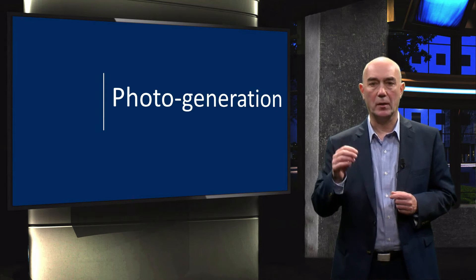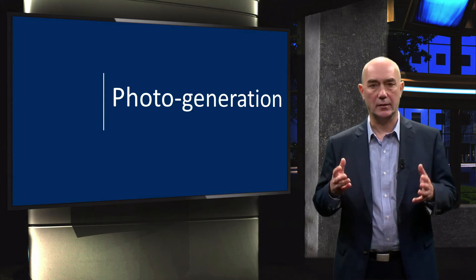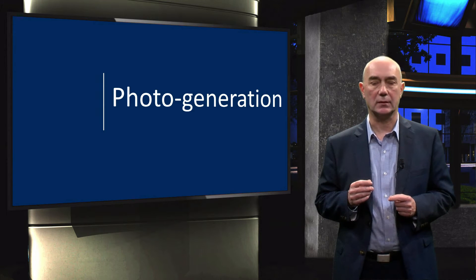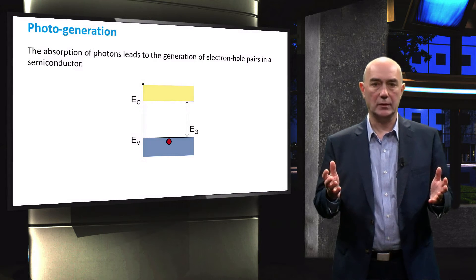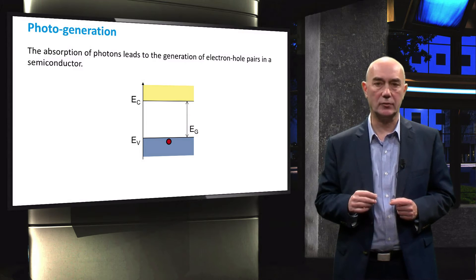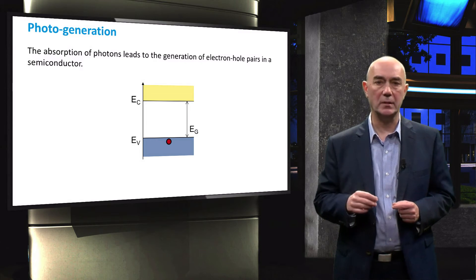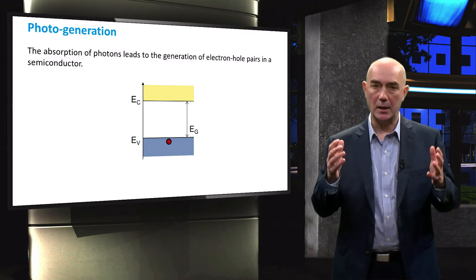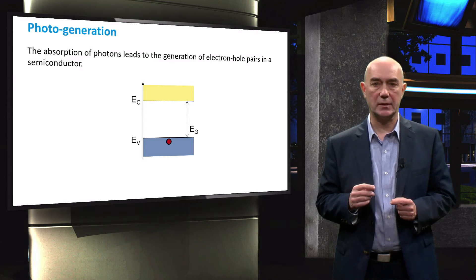Here, electron-hole pairs are generated as light is absorbed in a semiconductor. During the course introduction, we have already mentioned that mobile electrons and holes are formed in a semiconductor as a result of light absorption. Now I will explain how this process happens.